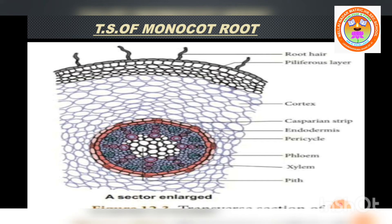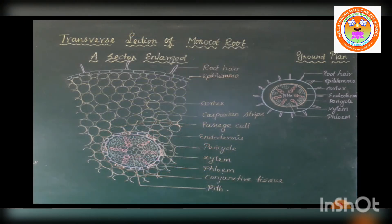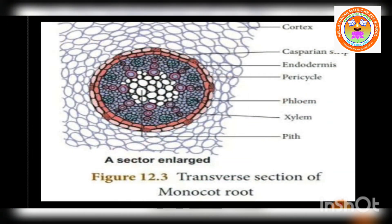The characteristic feature of the endodermis is the presence of casparian strips and passage cells. Casparian strips are band-like thickenings made of suberin. Next to endodermis, we can see the stele. The stele comprises pericycle, vascular tissues, and pith. All the tissues inner to endodermis constitute the stele.